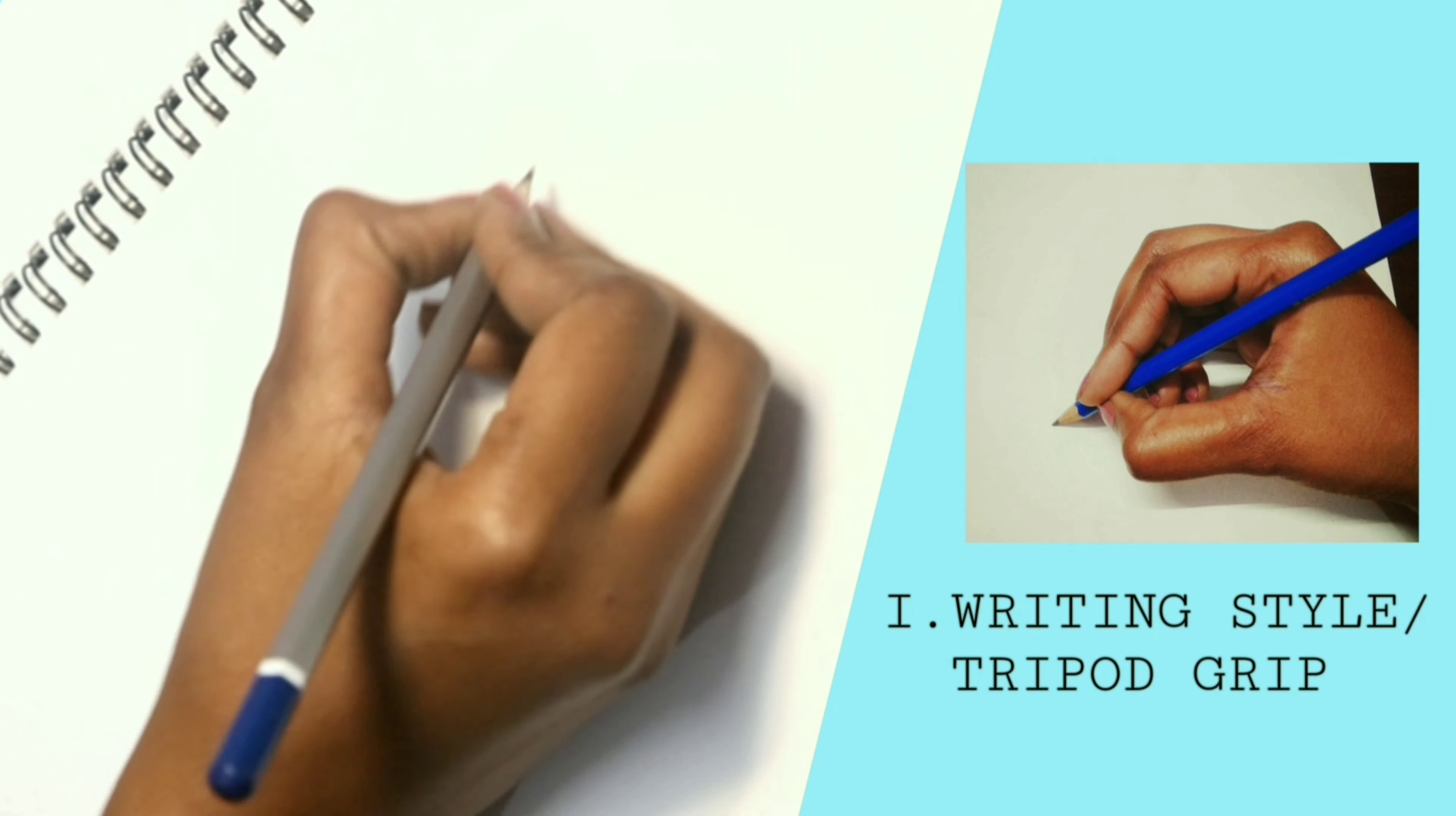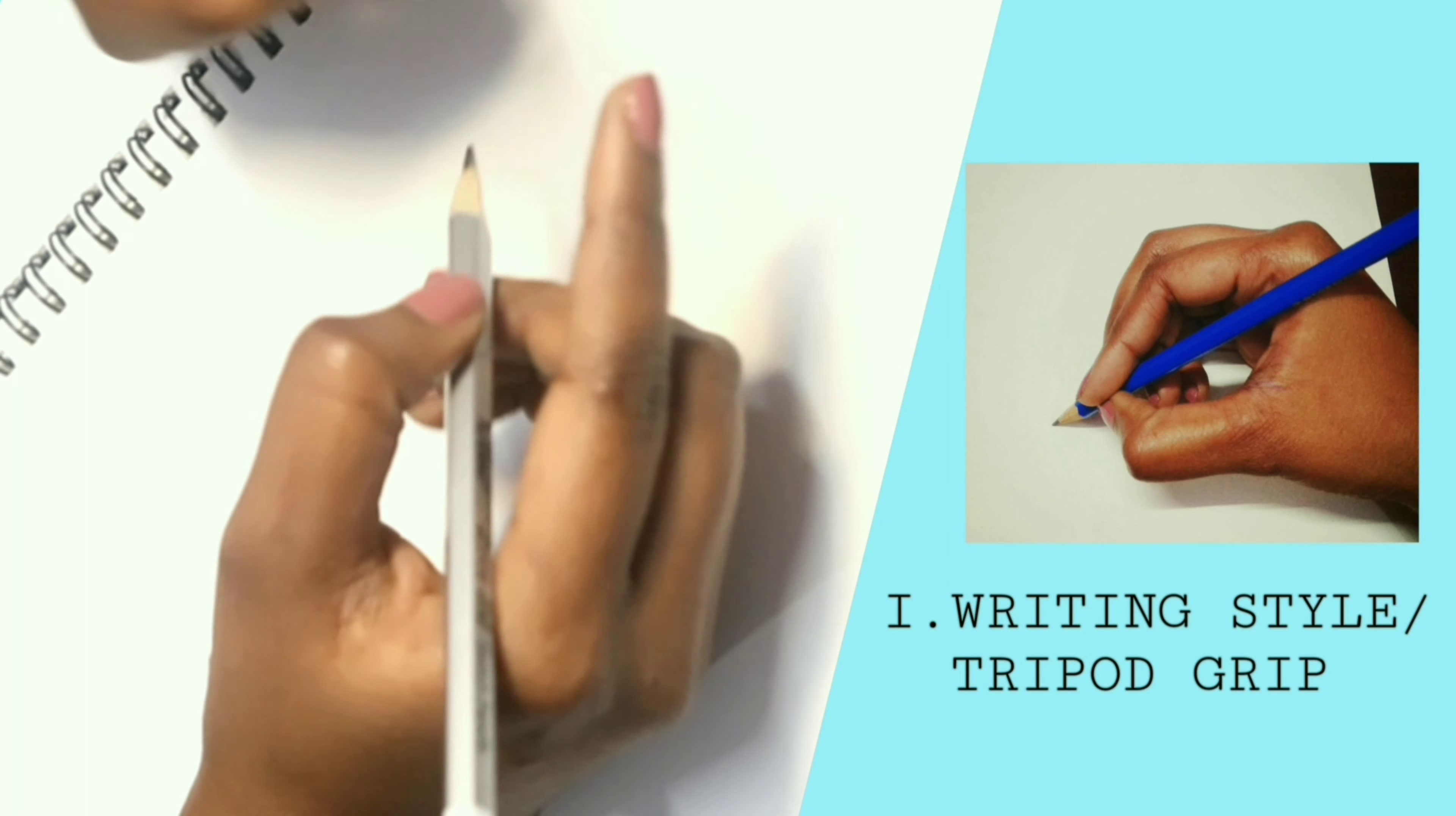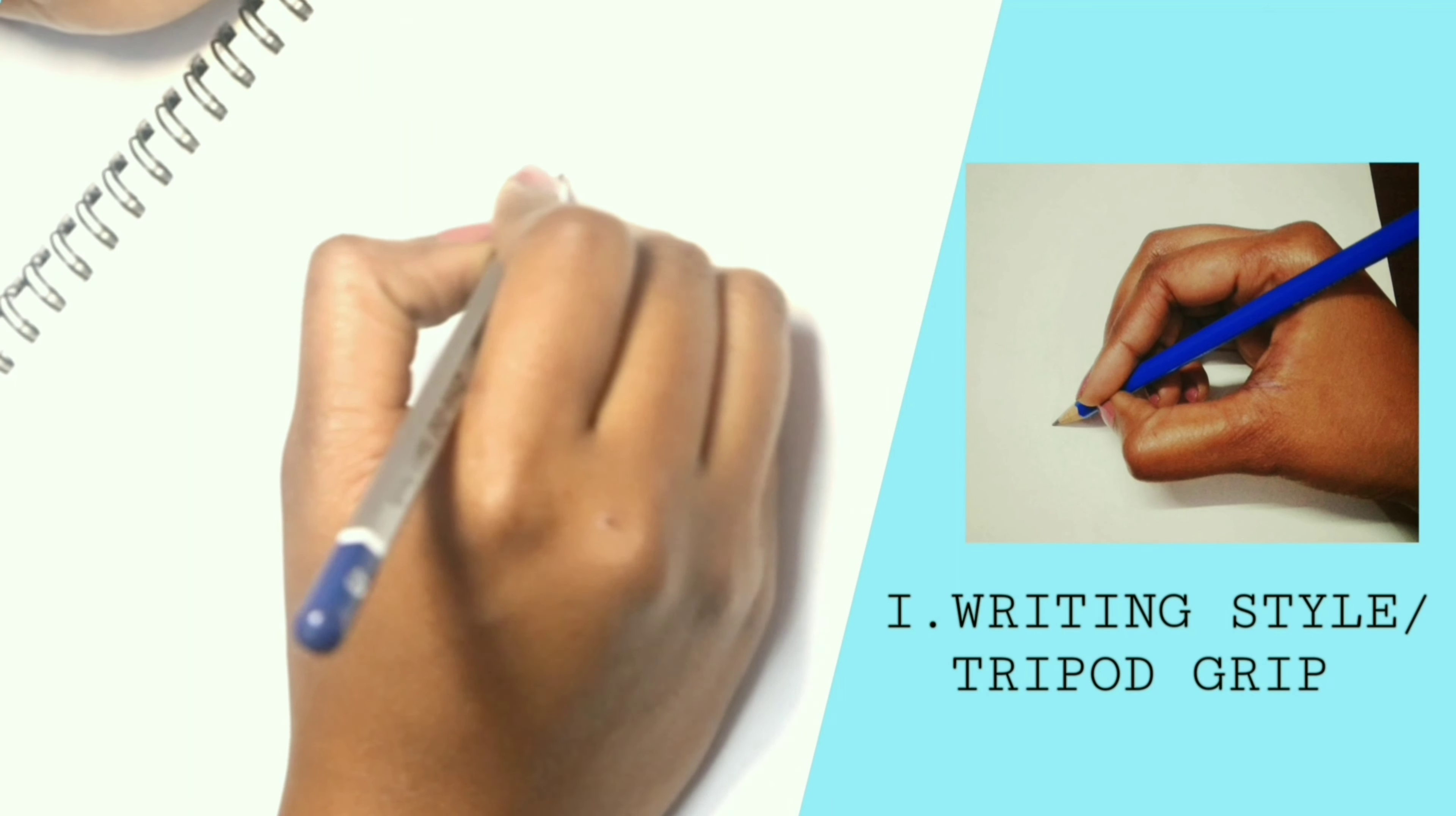The first style of holding a pencil is the writing style or tripod grip. Just imagine a tripod which has three legs hold the object. Likewise, the pencil is gripped between the thumb, index finger, and the middle finger, and the wrist rests on the paper.